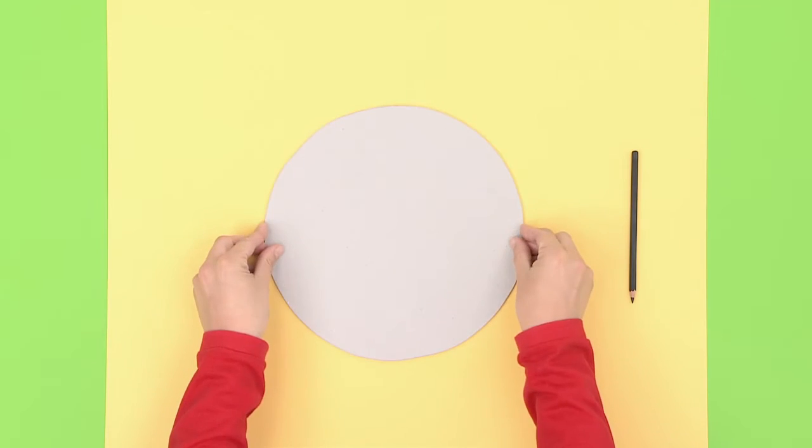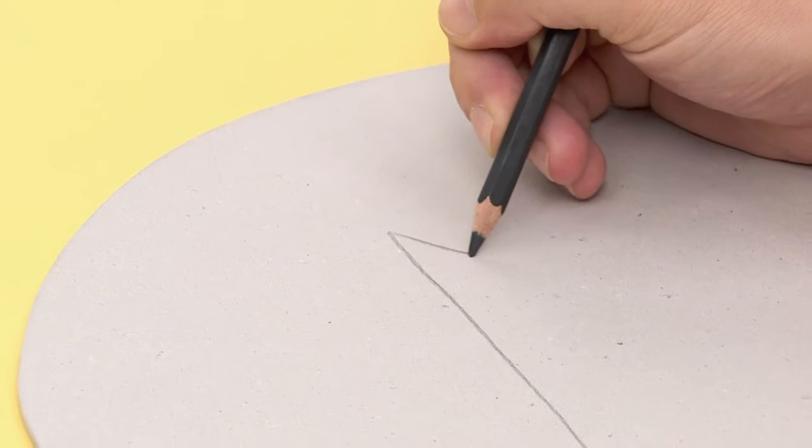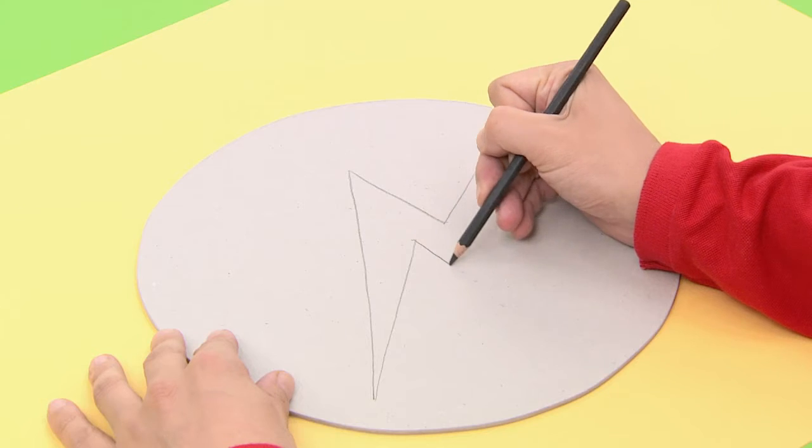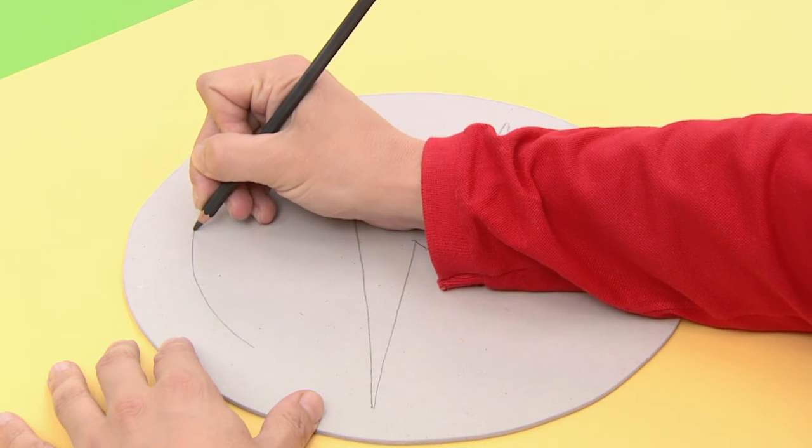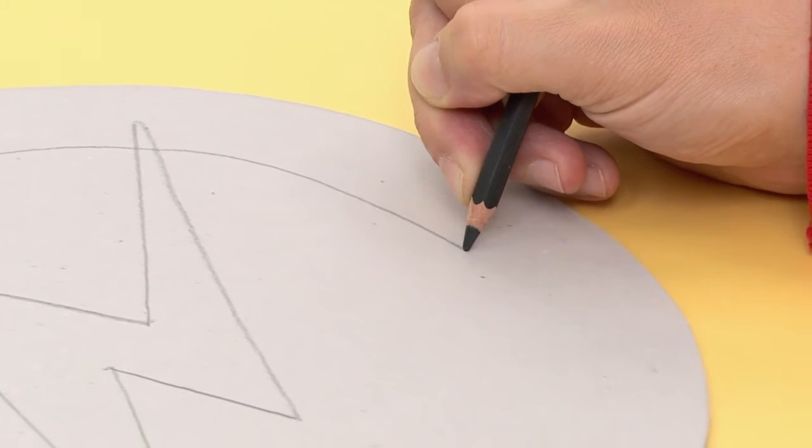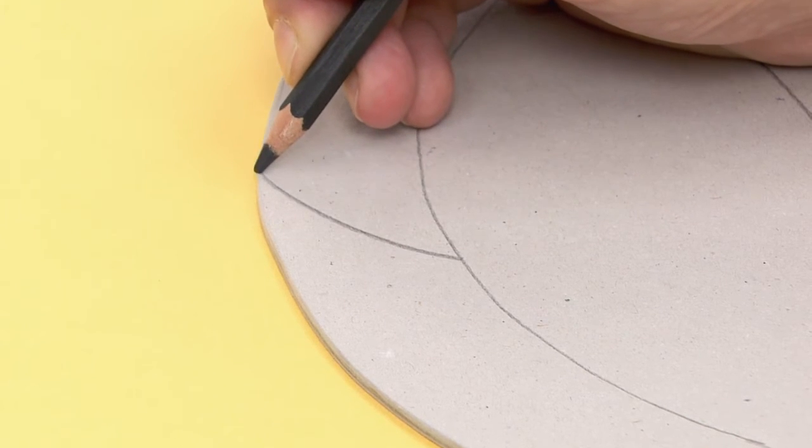Now you can start drawing it. Our design will be a bolt of lightning. Start with a linear line and finish with a zigzag. Draw another one under it and merge its corners. Draw a smaller circle around the lightning.